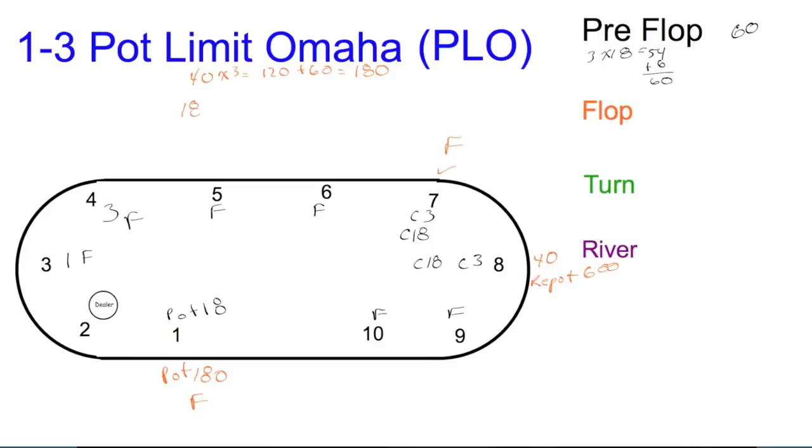We take 180 times 3—that's equal to 540 plus what's already in the pot, 60. It gives us a repot bet of 600.